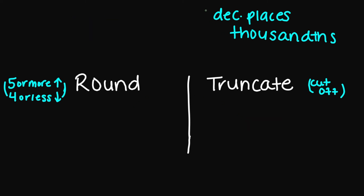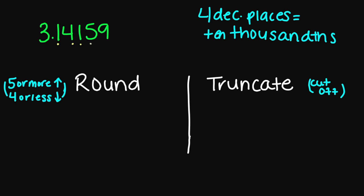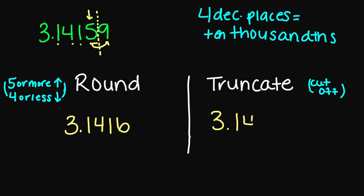Now let's try rounding and truncating to four decimal places, which is the same as the ten-thousandths place. Let's try 3.14159. Counting to the fourth decimal place puts me right here at the 5. If I look next door, I have a 9, which is greater than 5, so I round up — giving 3.1416. And if I truncate, I cut right between the 5 and the 9, giving 3.1415.